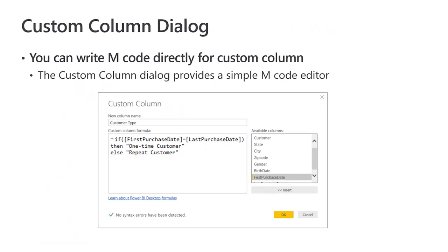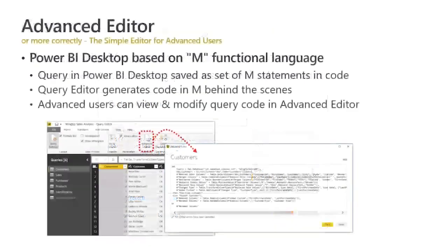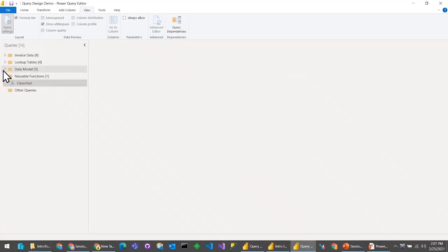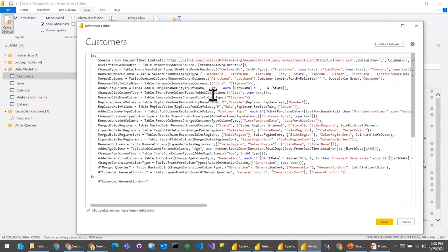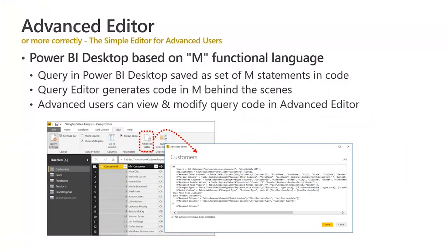The first time many Power BI Desktop report builders encounter the M programming language is when they want to create a conditional column inside the query editor — that if-then-else statement is written in M. We can also get into the Advanced Query Editor, where we're going to spend quite a bit of time. The Advanced Editor used to be just a text box, but over the last couple of years they added color coding and IntelliSense, and it's a much better experience for working with M code directly in Power BI Desktop.